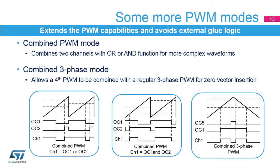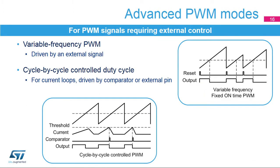Combined PWM mode allows a logic combination of two PWM signals generated by adjacent channels — output compare 1 and 2, or output compare 3 and 4. The PWMs can be ORed or ANDed to create complex waveforms, typically generating two periodic pulses with any pulse width and phase relationship. The combined three-phase mode targets three-phase motor control: channel 5 can be combined with channels 1, 2, or 3 to insert a low state in the middle of a centered pattern PWM signal, greatly simplifying low-cost current sensing using zero-vector insertion.